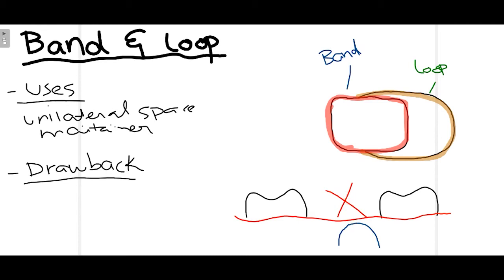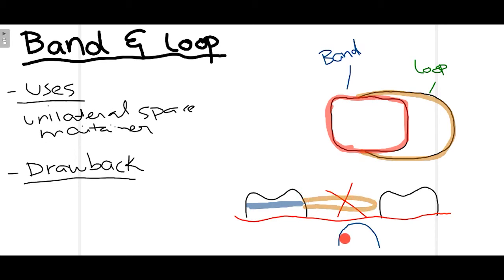When premature exfoliation occurs, there is a tendency for the permanent molar to move mesially and also for the adjacent tooth to drift. To prevent this, we use a band and loop where the band is placed over the permanent molar and the loop extends into the space. This prevents migration of the adjacent teeth and maintains the space so the permanent tooth erupts in its proper alignment.